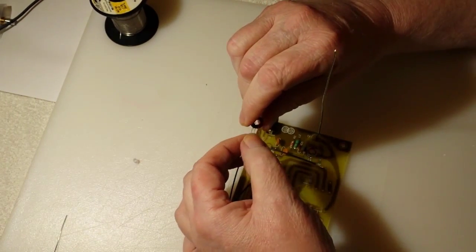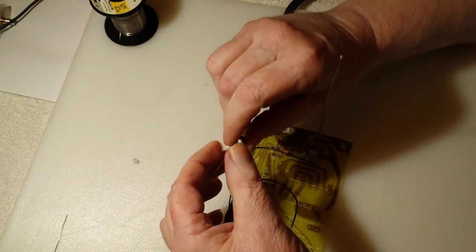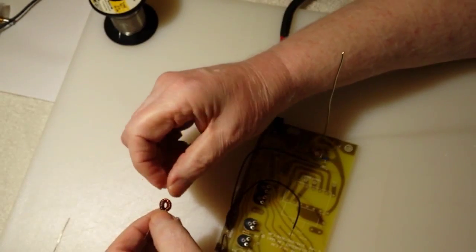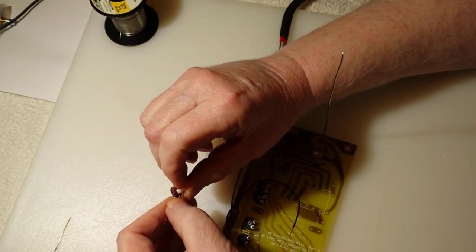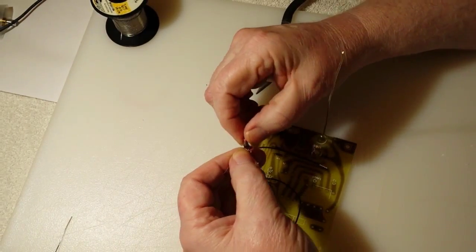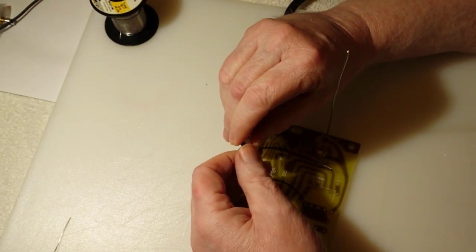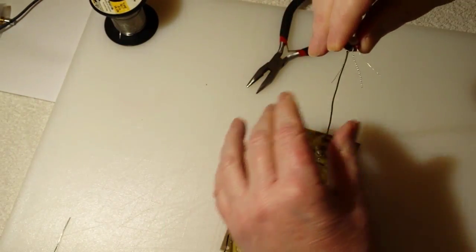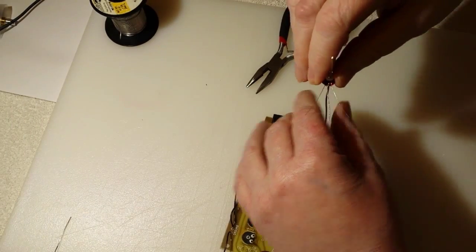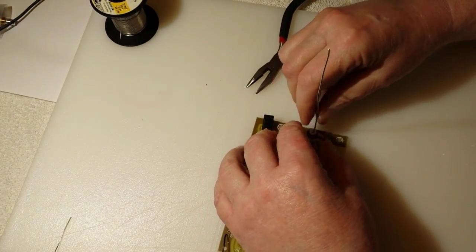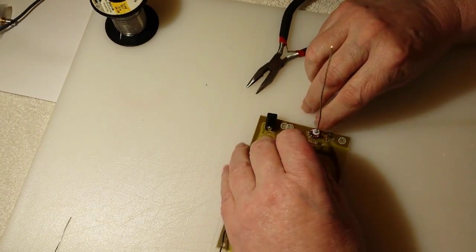You notice here the toroid has a little Teflon shoulder washer or a rivet that keeps it centered on that wire. The twisted pair goes in the center hole and the other two wires come off that toroid going on each side there. One in one hole, one in the other hole on each side.